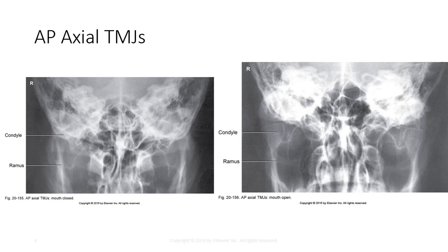One exposure should be made with the mouth closed and another made with the mouth open, if not contraindicated. As you can see in this slide, the opening of the mouth in the image on the right displaces the condylar process inferiorly when it leaves the mandibular fossa.